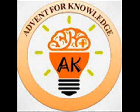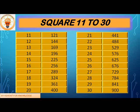Hello everyone, welcome to our channel Advent for Knowledge. Today we'll be learning the squares and cubes of numbers from 11 to 40. So let's begin. 11 square is 121, 12 square is 144, 13 square is 169, 14 square is 196, 15 square is 225, 16 square is 256, 17 square is 289, 18 square is 324, 19 square is 361.